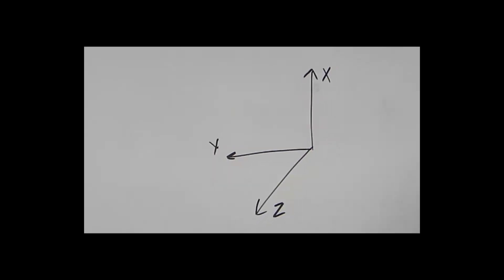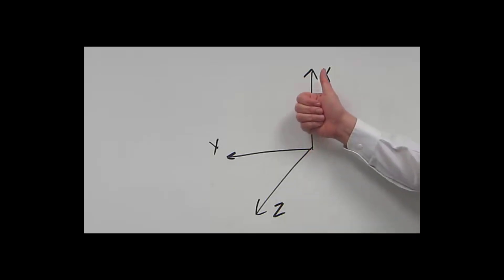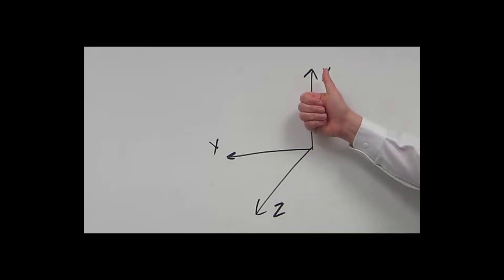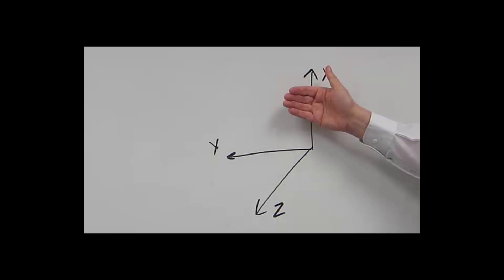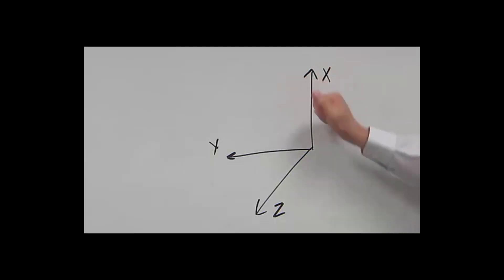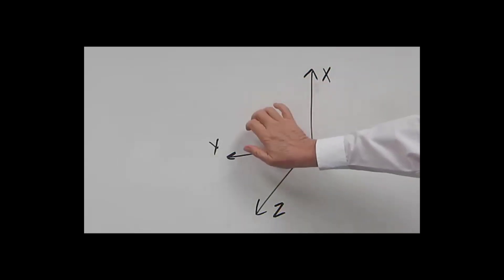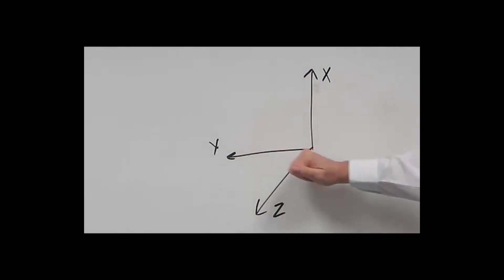Also, if I'm trying to determine rotation — later when we start talking about moments and torque — if I take my thumb and point it in the positive direction of the vector representing that torque, my hand will curl in the positive rotational direction. These conventions will become very important and useful as we begin to work problems.